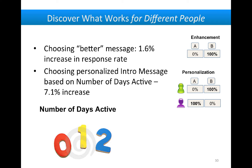When you broke this data up by how many people were active, the first message — the brief one — was very effective for people who weren't active much at all, maybe because they were more likely to read it and then go on to answer the survey. Whereas you got higher response rates from people who were more active when you mentioned they've been active, possibly because they wanted to justify their recent inactivity.